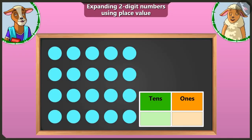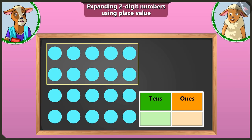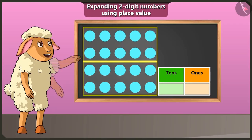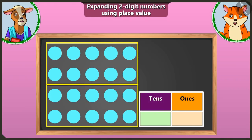Now look, children, there are some circles here. Let us write them as groups of ten. One, two, three, four, five, six, seven, eight, nine and ten. One, two, three, four, five, six, seven, eight, nine and ten. With these two groups, let me make a group of ten like this. Now there is nothing remaining. There are two groups of ten here, so how will we write this? There are two groups of ten, so we have to write two in the tens box.